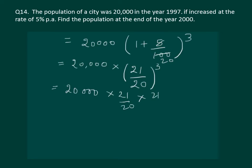Which is equal to 20000 multiply by 21/20, 21/20, 21/20 and once you solve it you will get twenty three thousand one hundred and fifty two point five.